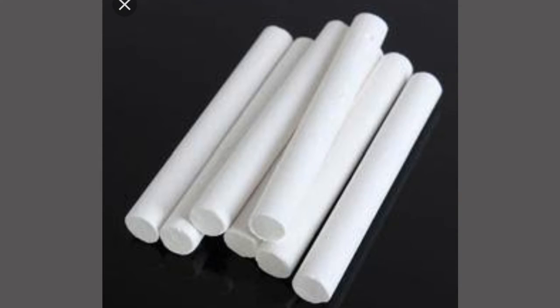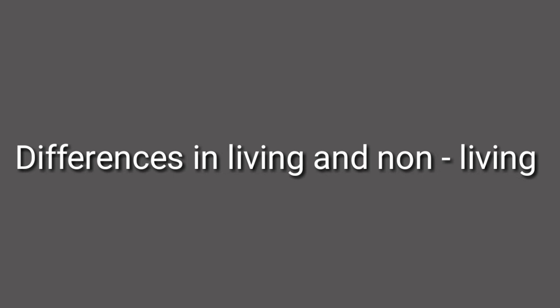Now let's see the common features between living and non-living things. Let's take some examples: lion, elephant, stone, and chalk. The common thing is that all these things possess mass, that is weight, and occupy space. Both living and non-living things have a structural unit — cells in living things and molecules in non-living things.